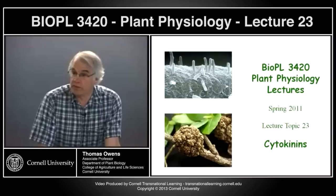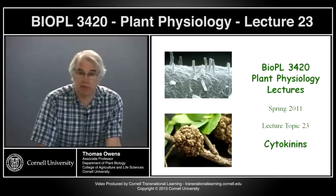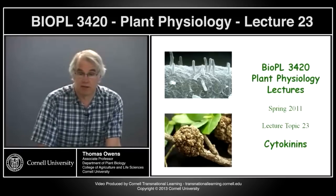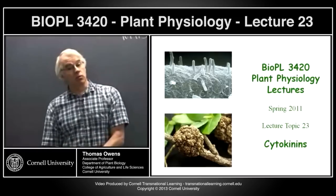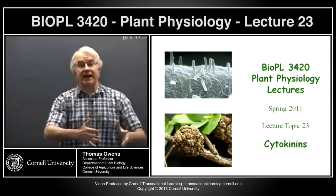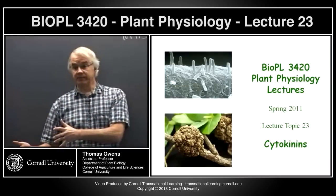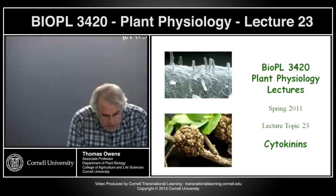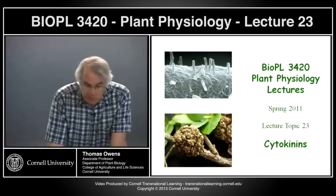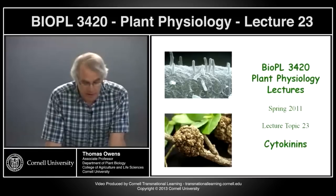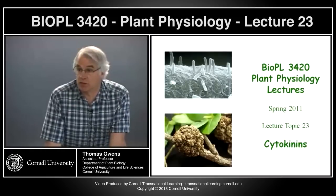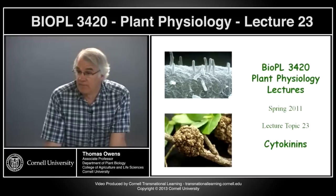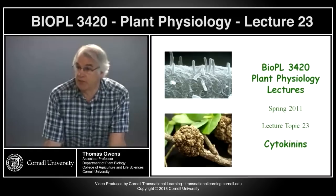Wounding responses: essentially every cell in the plant has the ability to start dividing again if adjacent to a wound site. Because wounds can happen anywhere in the plant, this ability must be present in all cells. We also see formation of lateral roots, where cells in the vascular cylinder that have reached maturity can start dividing again and form a new meristem.